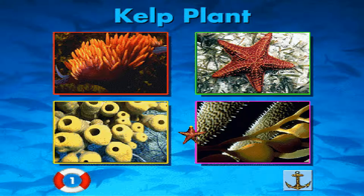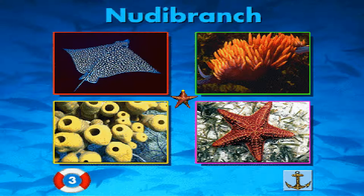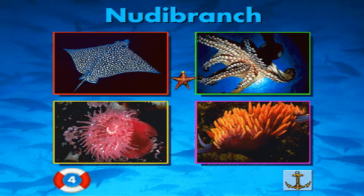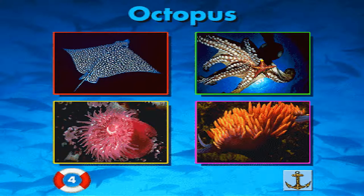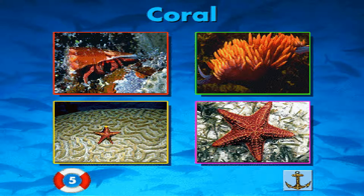I'm a kelp plant. I'm a hermit crab. Can you find me? You're right. I'm a hermit crab. I'm a nudibranch. Can you find me? You're right. I'm a nudibranch. You're doing great. I'm an octopus. Can you find me? You're right. I'm an octopus. I'm a coral. You're right. I'm a coral.